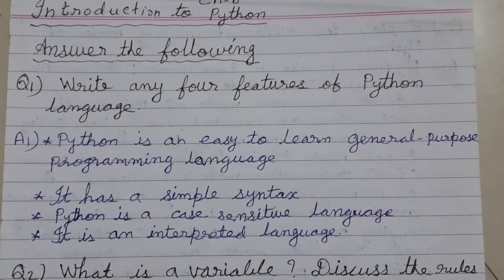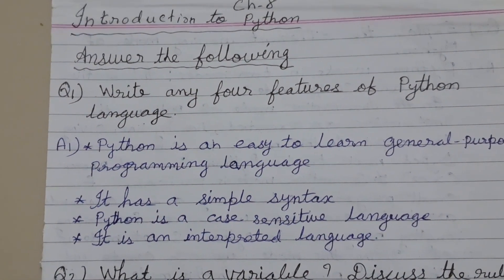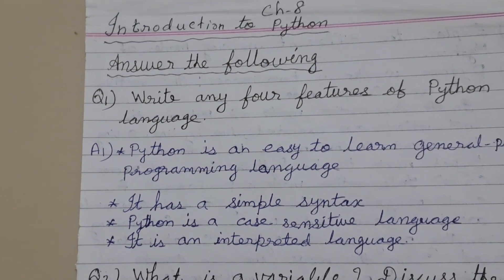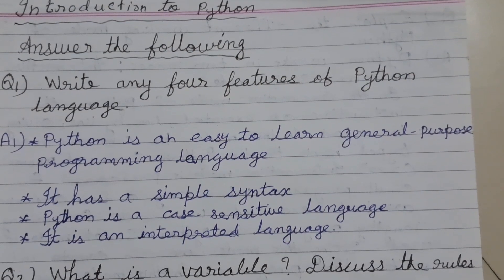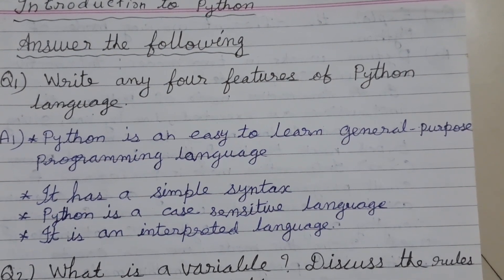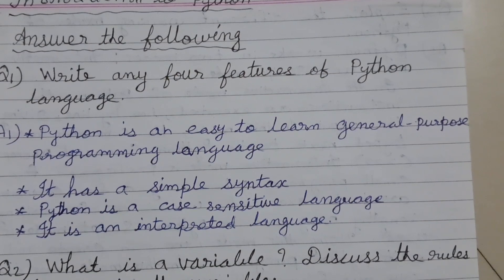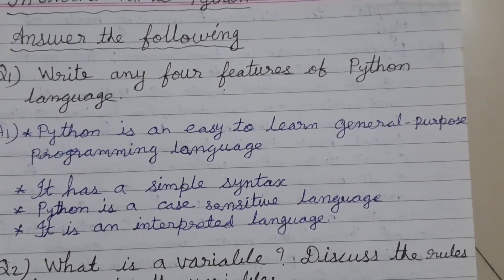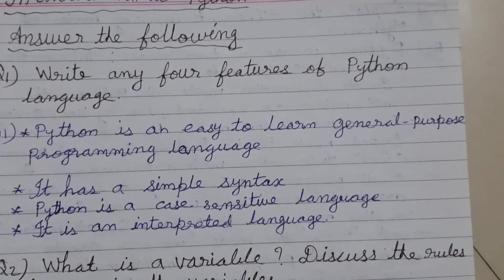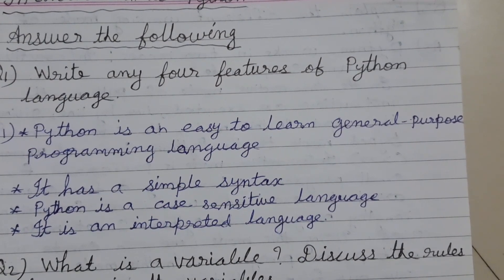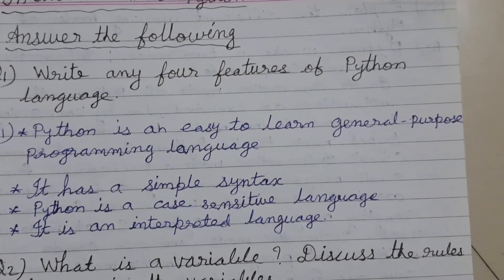Now, answer the following questions. Write any 4 features of Python language. Answer: 1st, Python is an easy to learn, general purpose programming language. 2nd, it has a simple syntax. 3rd, Python is a case-sensitive language. 4th, it is an interpreted language.